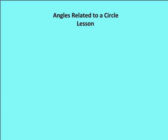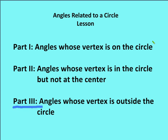Hello and welcome to OttenMath. In this edition, we're going to talk about the third of three installments relating angles to a circle. In the first section, we talked about angles whose vertex is on the circle. In the second, we talked about angles whose vertices were inside the circle, but not at the center. In this installment, we're going to talk about angles whose vertex is outside of the circle.